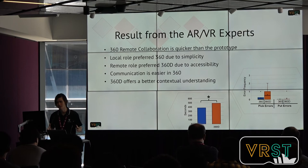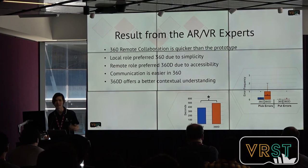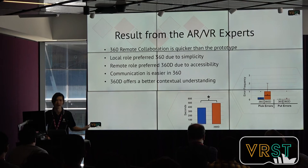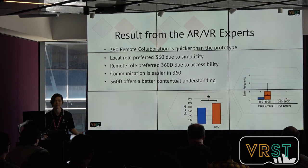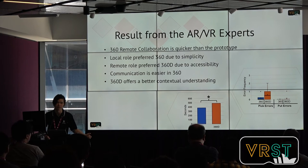In our prototype, even though there are complications in understanding what the remote user is saying, it gives the remote user accessibility control — since it is 3D, the remote user can walk around independently. Therefore, they can understand the tasks and environment without relying on the local user. In terms of contextual understanding, our prototype offers much higher contextual understanding because of the ability to walk around the environment and switch between 360 photo bubbles and the 3D view.